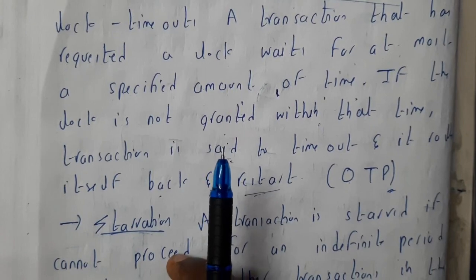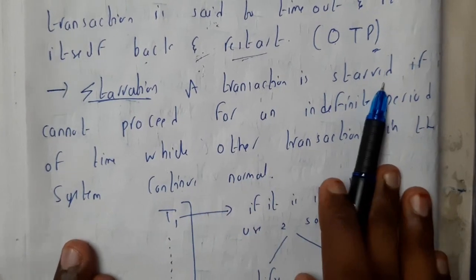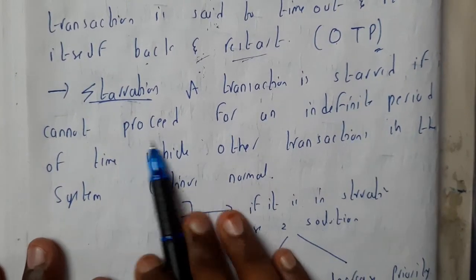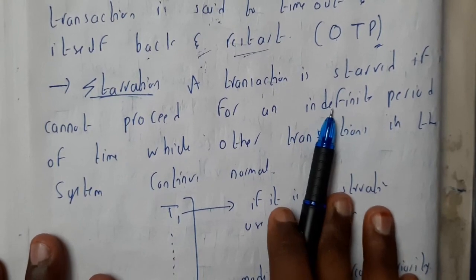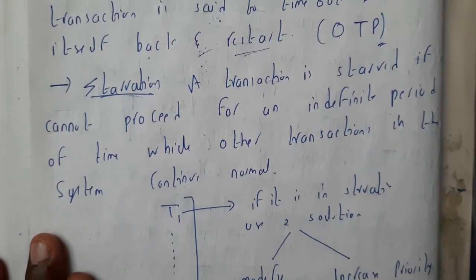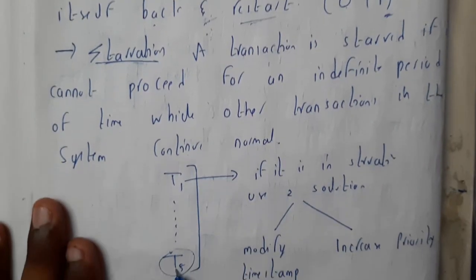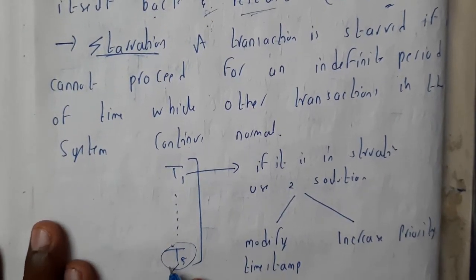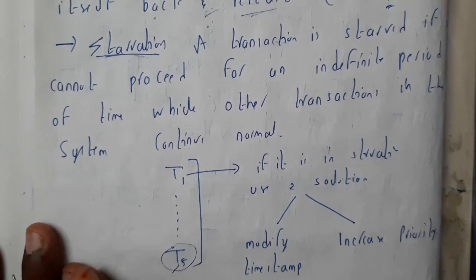While discussing all these things, the main thing we need to note is starvation. A transaction is starved if it cannot process for an indefinite period. If there are many transactions, the last transaction will keep on waiting, and at one particular moment of time it can lead to starvation.